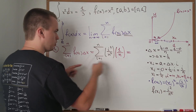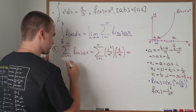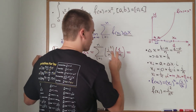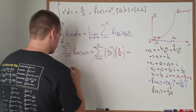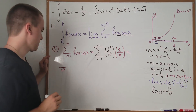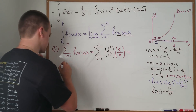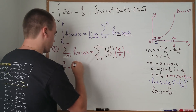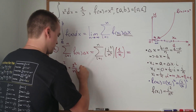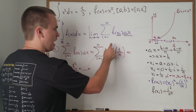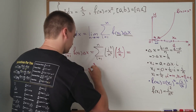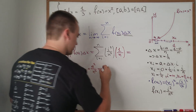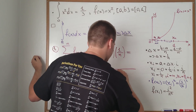Let me rewrite this sum term by term to simplify. When i equals 1, the first term is 1²/n³. The second term is 2²/n³. And the last term is n²/n³. Since each fraction has the same denominator, I find the common denominator n³, and the numerator becomes 1² + 2² + 3² + ⋯ + n².